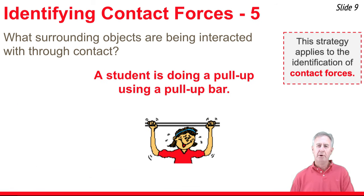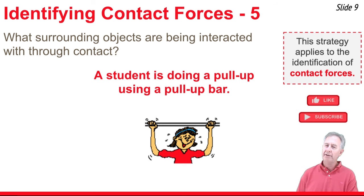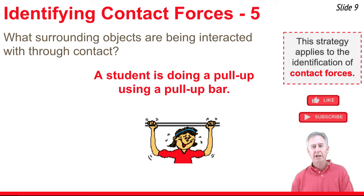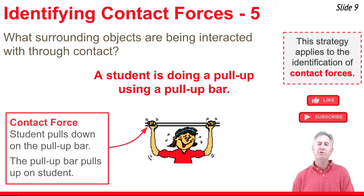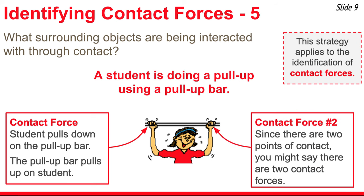In our fifth and final example, a student is doing a pull-up using a pull-up bar. We ask: what object in the surroundings is the student interacting with? The student is touching the pull-up bar. As she tries to pull herself upward, she pulls downward upon the bar, and the bar pulls upward upon her. We'll also notice the student is touching the pull-up bar in two places — one from the left hand and one from the right hand — so there are actually two contact forces, both identical in nature: the student pulls downward on the bar, and the bar pulls upward on the student.